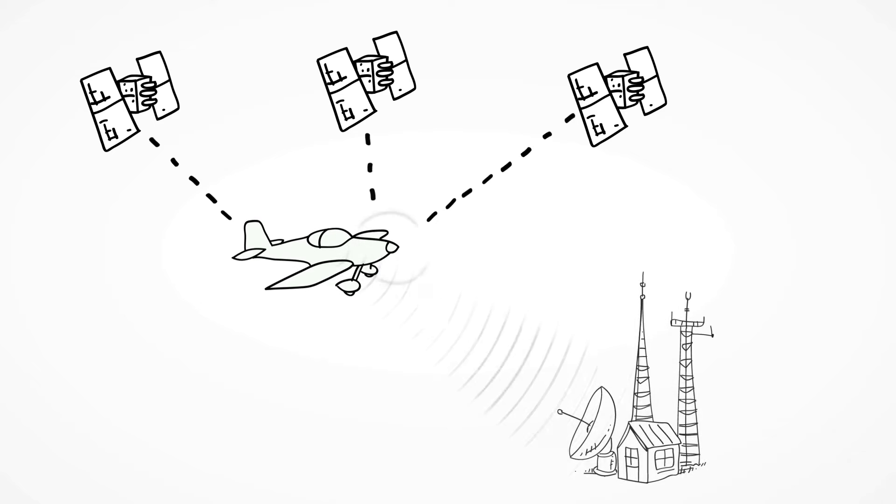This information is transmitted to ADS-B ground stations, which allows ATC to reduce separation minimums. To ensure safety, GPS data each plane sends must come from a highly accurate source, like an approved WAAS GPS receiver.